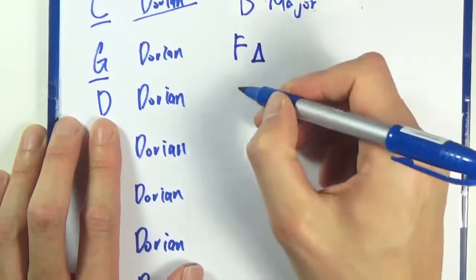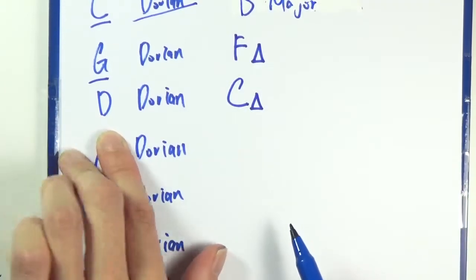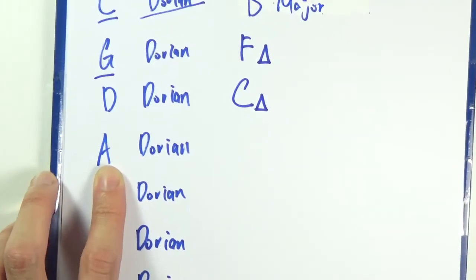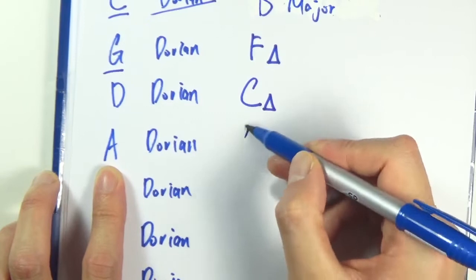D Dorian - C major, right. Go down a whole step from D. A Dorian - then you go down a whole step, so that's G major.